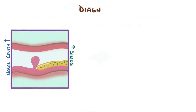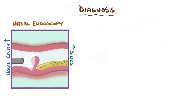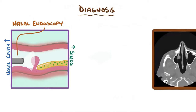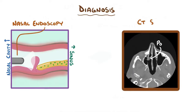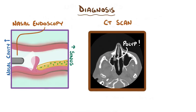Nasal polyps are diagnosed visually with nasal endoscopy or by medical imaging with a CT scan. Diagnosis is often made after clinical symptoms become problematic, but changes to the respiratory mucosa can be detected even in their absence.